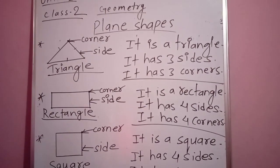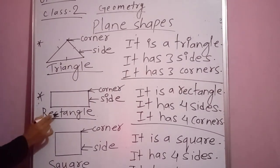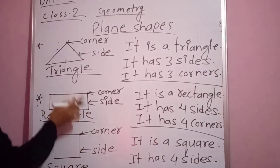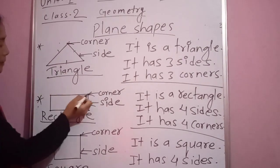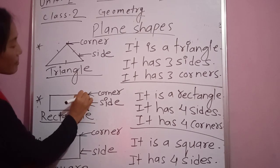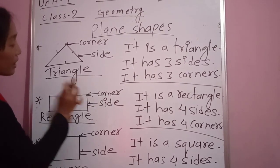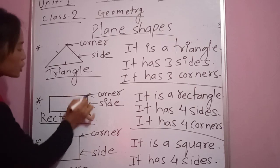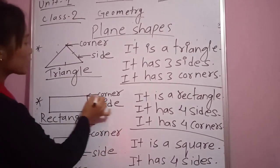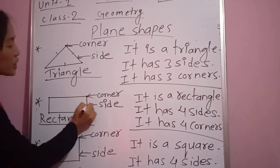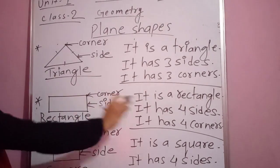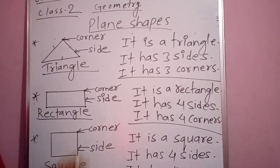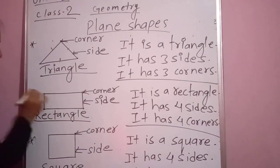Let's go ahead towards the rectangle — the second plane shape. R-E-C-T-A-N-G-L-E. I have labeled this part as I did for the triangle. I have marked the corners — that is the place where two line segments meet, so it is called a corner. There are altogether four lines — four sides: one, two, three, four. And corners: one, two, three, four corners.